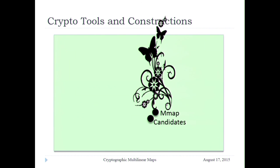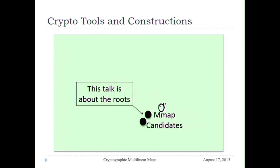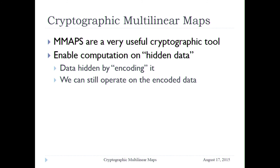This talk is about the roots. I'm going to talk about the multilinear map candidates — trying to understand what they are, what they give us, and what the hardness is. So what are cryptographic multilinear maps? First and foremost, a cryptographic multilinear map is a tool — something we use to build other things from. The main thing they do for us is let us compute on hidden data. We hide the data we're interested in by encoding it, and we can still operate on it in this encoded state.